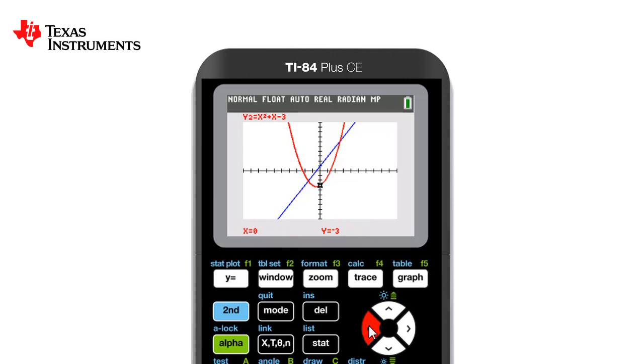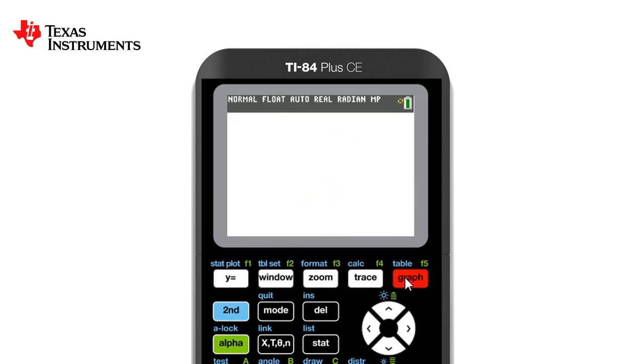This isn't as accurate and a nice application is to press table which is second graph and this gives us a table of values and conveniently will allow us to find the intersect if it is a clear number.